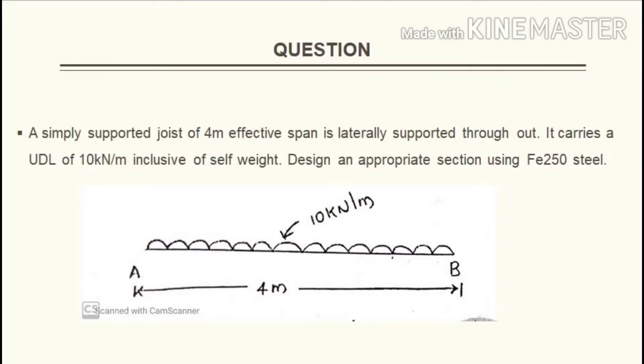A simply supported joist of 4 meter effective span is laterally supported throughout. It carries a UDL of 10 kilonewton per meter inclusive of self-weight. Design an appropriate section using Fe 250 steel. So it is provided that it is a simply supported joist with a span of 4 meter, laterally supported throughout, carrying a load of 10 kilonewton per meter inclusive of self-weight. We have to design an appropriate section using Fe 250 steel.